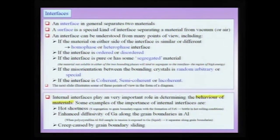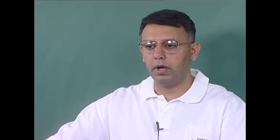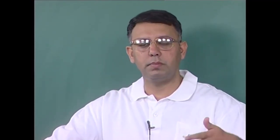For example, consider hot shortness in iron: when we roll iron with some impurity of sulfur present, the sulfur can segregate to the grain boundary region and form the FeS phase, or the iron sulfide phase, at the grain boundary. This can lead to brittleness during hot rolling conditions because FeS can become a liquid phase and the material will behave as if it is brittle. We want to avoid sulfur impurity segregating to the interface, and it has been noted that this segregation occurs even in very small quantities before hot shortness is observed.